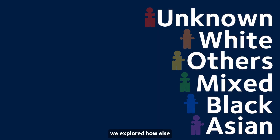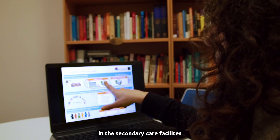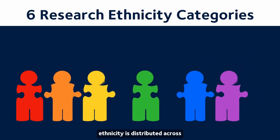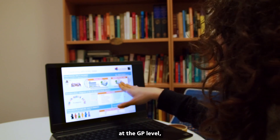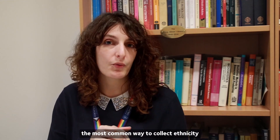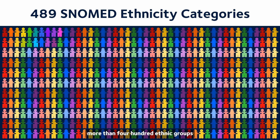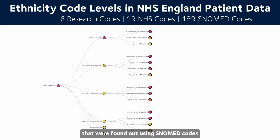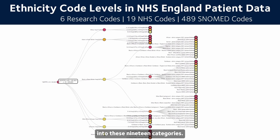Apart from that, we explore how else we can use ethnicity. In secondary care facilities like hospitals, ethnicity is distributed across 19 groups that are the same as the census in the UK. At the GP level, the most common way to collect ethnicity is using SNOMED codes — we found that there are more than 400 ethnic groups described by SNOMED codes, and these can be mapped or organized into those 19 categories.